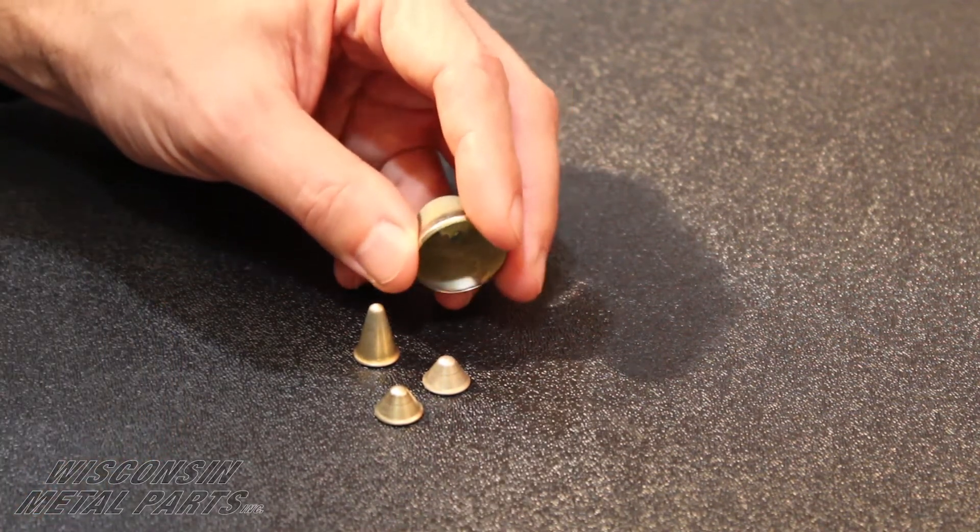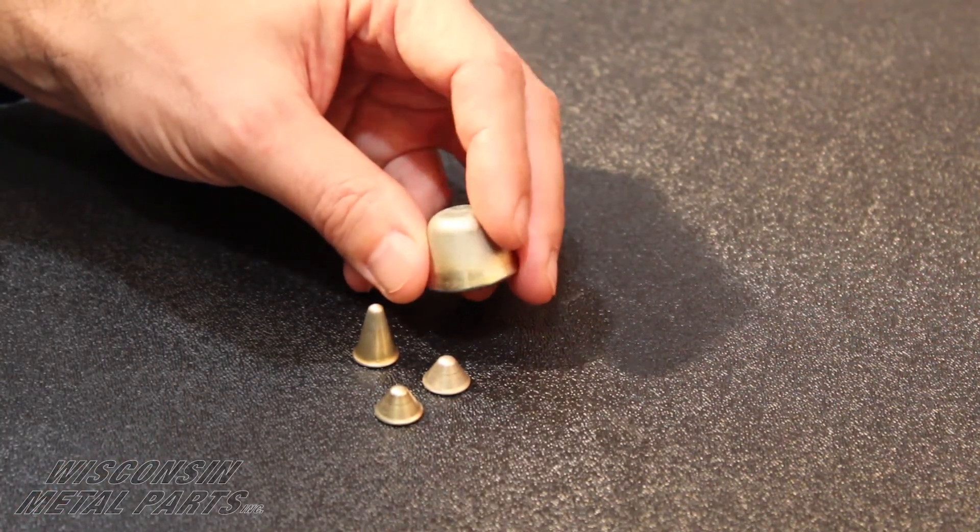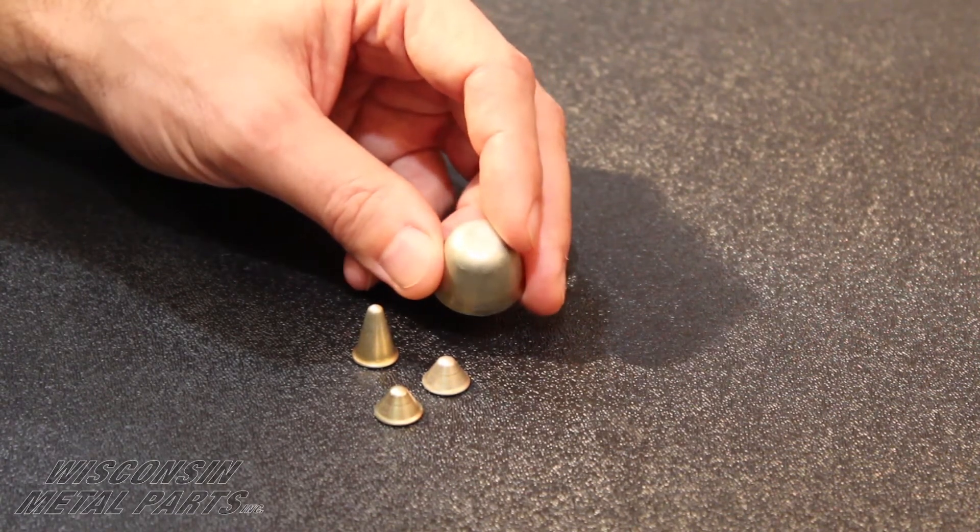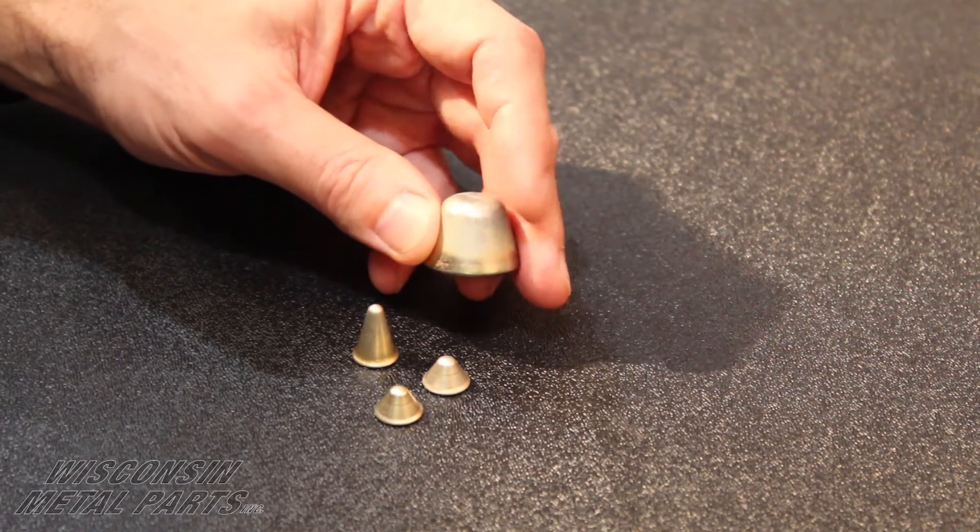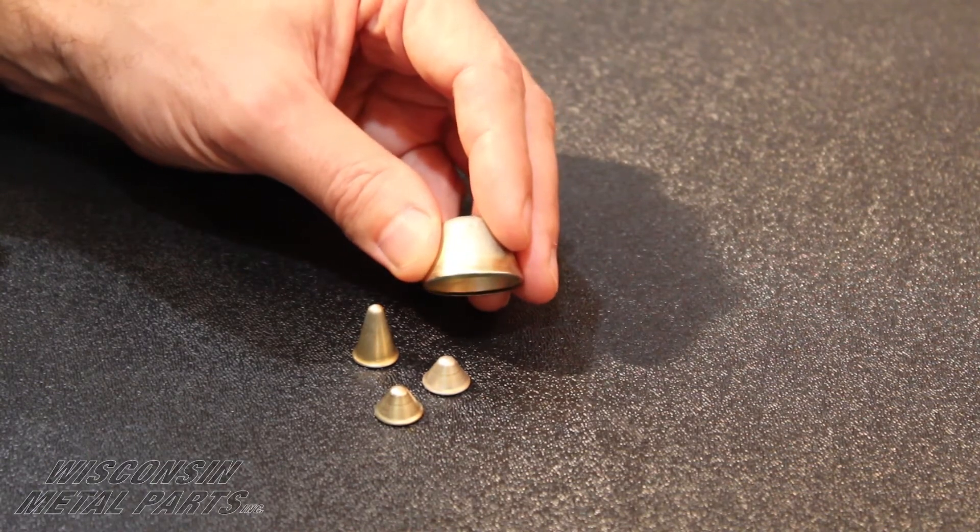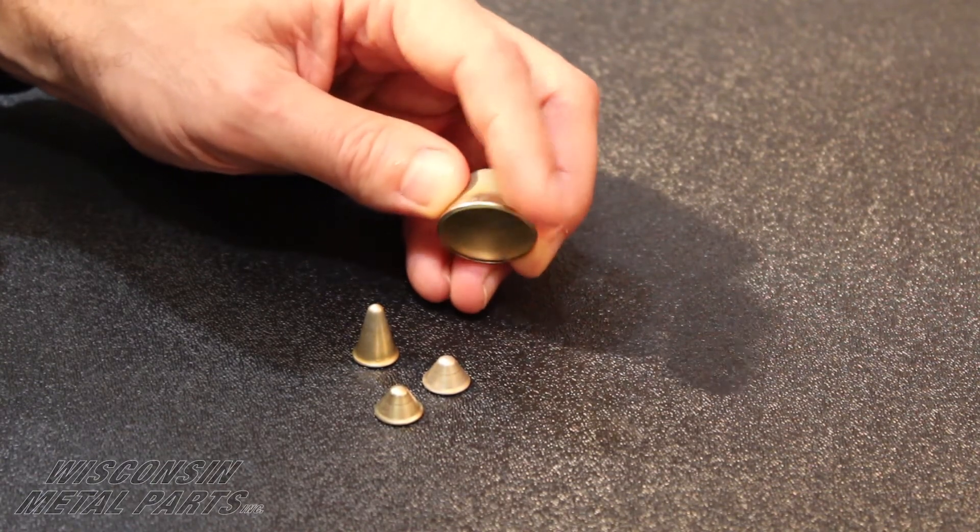So these are a little more challenging parts for a drawn part in a progressive die but we do run millions of these parts a year. We design and build the tooling here and also the gauges for these defense industry parts.